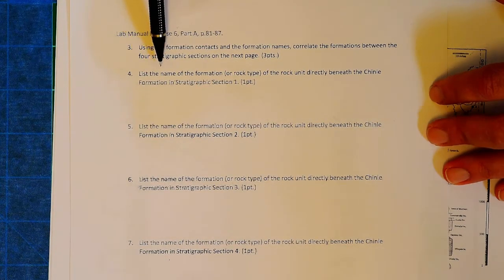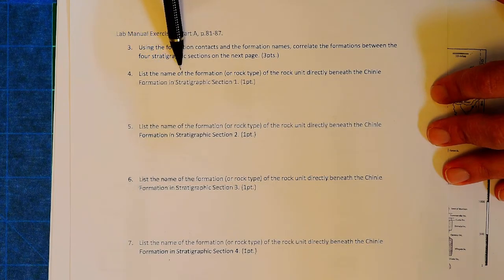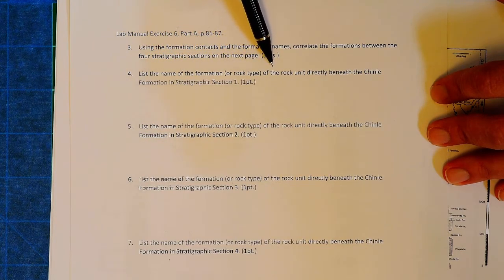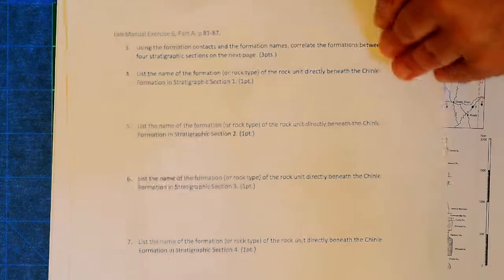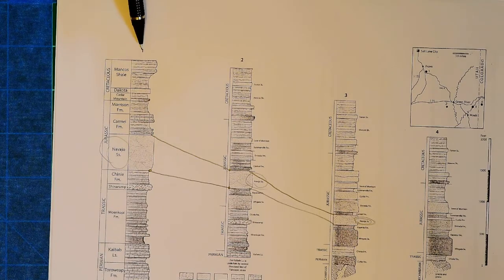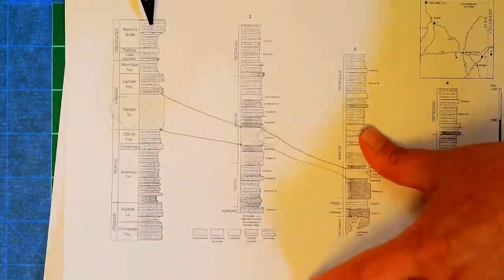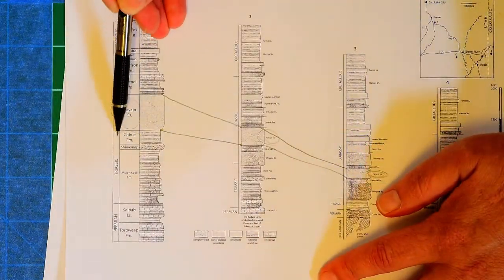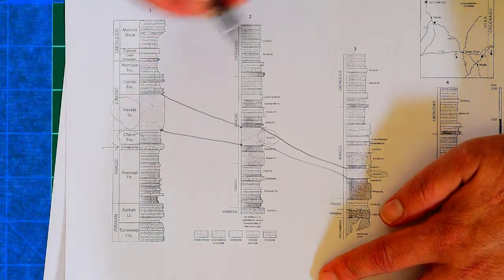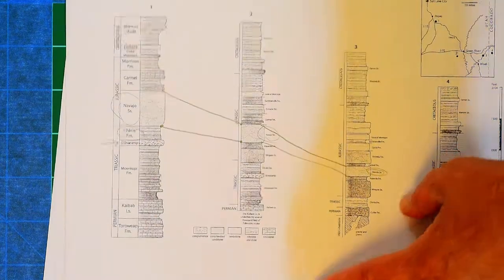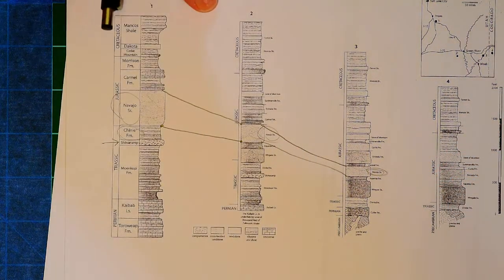It says, list the name of the formation or rock type of the rock unit directly beneath the Chin-Li formation in stratigraphic section one. So you go to stratigraphic section one, you'll come down here and say, oh, here's the Chin-Li formation, and then you will tell me what rock is directly underneath that. So that's what some of those questions will be.